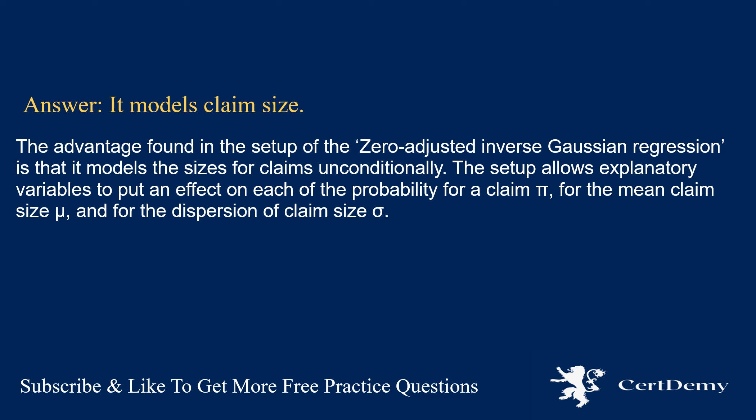The advantage found in the setup of the zero-adjusted inverse Gaussian regression is that it models the sizes for claims unconditionally. The setup allows explanatory variables to have an effect on each of: the probability for a claim pi, the mean claim size mu, and the dispersion of claim size sigma.